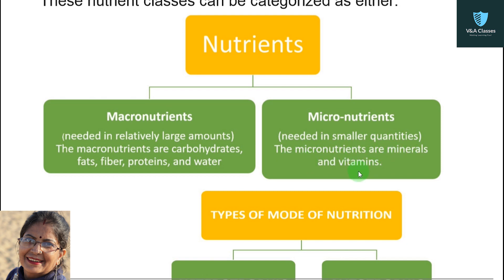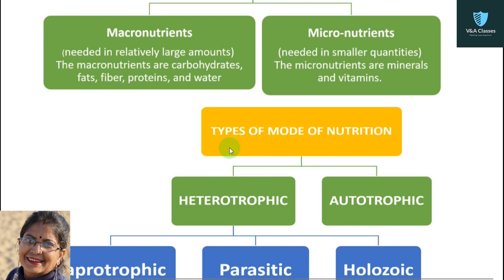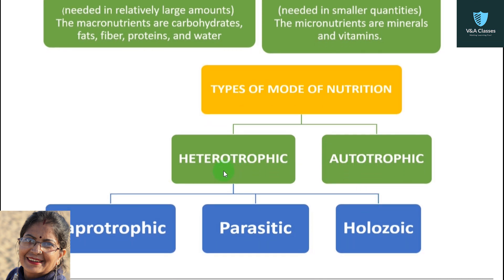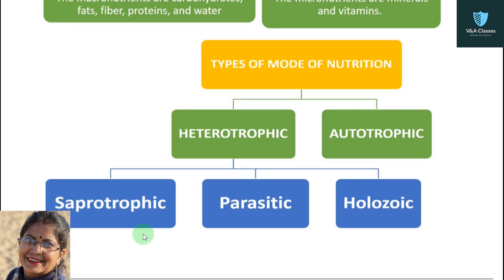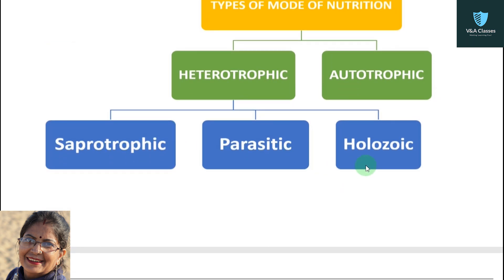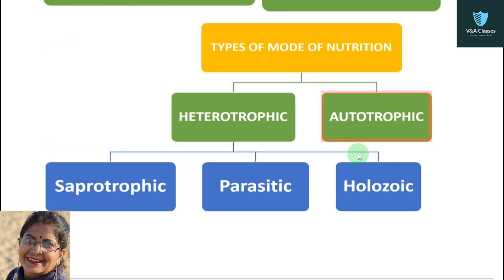Next topic is the types of modes of nutrition. There are two types: first, heterotrophic, and second, autotrophic. Heterotrophic nutrition is further divided into three types: saprotrophic, parasitic, and holozoic.